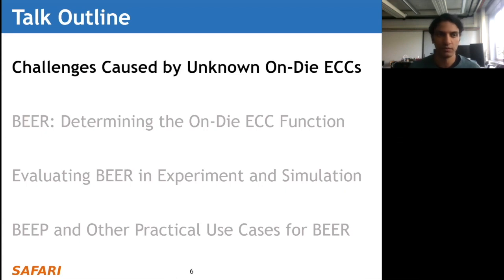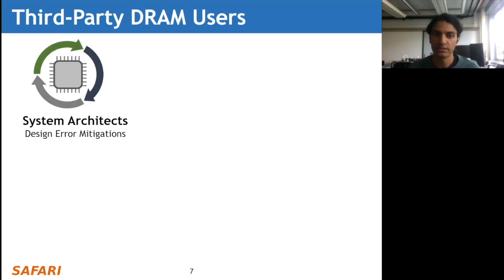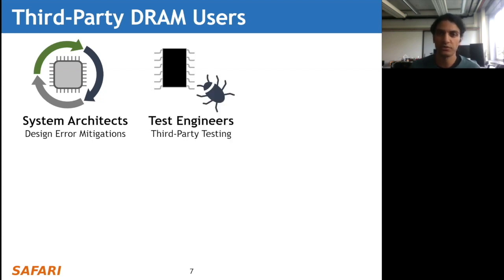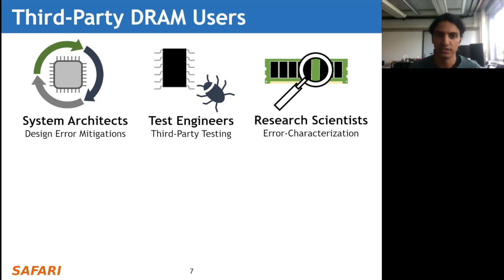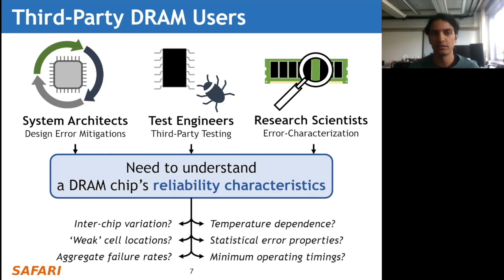I'm going to talk about the challenges caused by an unknown on-die ECC mechanism. There are three categories of third-party DRAM users: system architects who design system-level error mitigation mechanisms that need to interact with DRAM chips; test engineers who perform extensive third-party testing and validation of DRAM chips; and research scientists who perform error characterization studies to understand how DRAM chips work and what their error characteristics look like. All three need to understand DRAM reliability characteristics including variation between chips, temperature dependence, and the locations of weak cells within the DRAM chip.